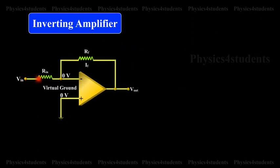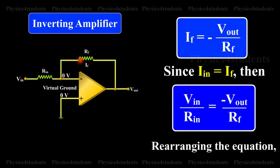It can be proved that IF is equal to minus Vout by RF. Since IIN is equal to IF, then VIN by RIN is equal to minus Vout by RF.